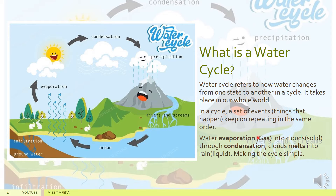Through vapour — the first process is evaporation. Into clouds — condensation — the change of gas to liquid to solid. And letting go of that water from the sky is precipitation. And it's a whole cycle that never changes.